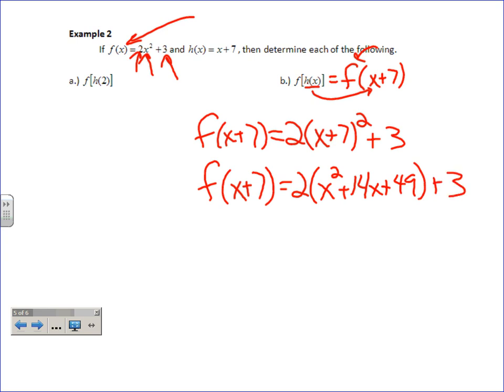Do you mind if I just speed things along and take care of it for you? So if you foil x plus 7, you should get x squared plus 14x plus 49. And so we clean it up. 2x squared plus 28x plus, well, eventually 101. Is everybody okay with me just putting 101? Because you get 98 and you add the 3. So that's right. That's all we've got to do. It doesn't say factor. It just says find f(h(x)).